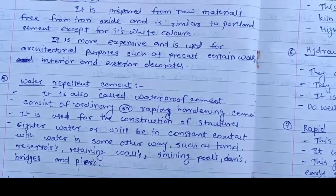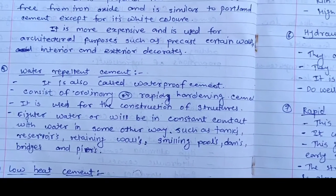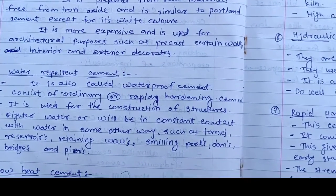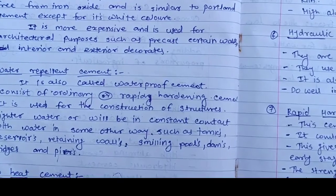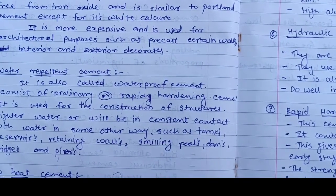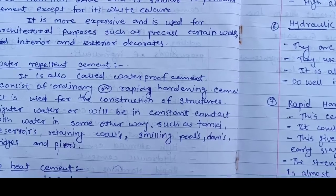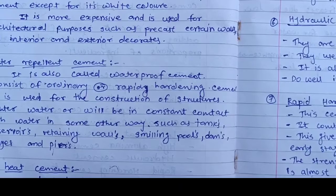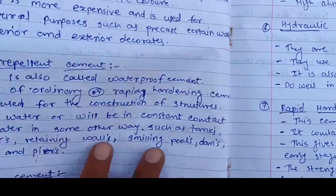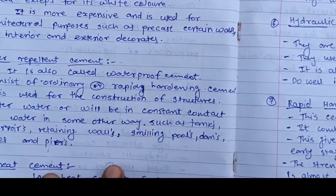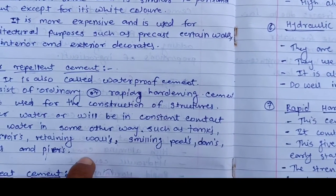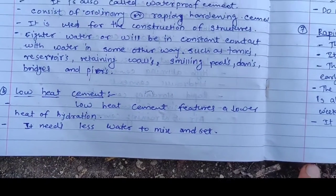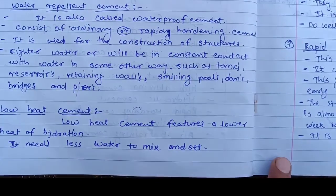The third type is water repellent cement, also called waterproof cement. It consists of ordinary and rapid hardening cement compounds. It is used for the construction of structures where water will be in constant contact, such as tanks, reservoirs, retaining walls, swimming pools, dams, bridges, and piers.